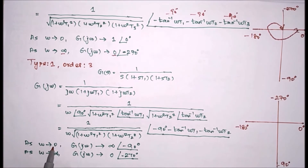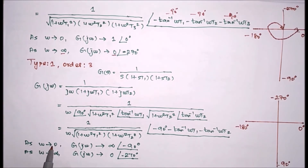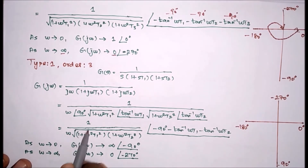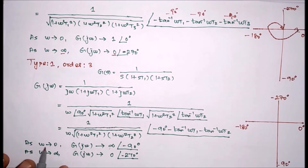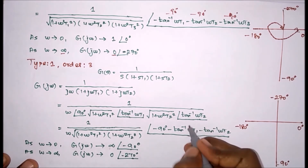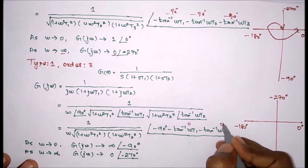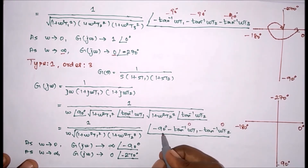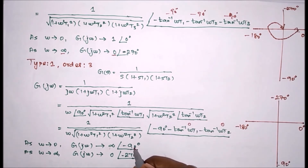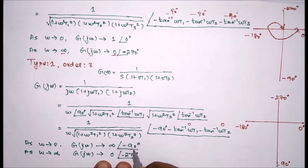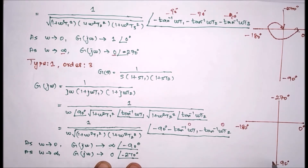As usual, we substitute omega equal to 0. When omega equals 0, the magnitude becomes 1 by 0, which equals infinity. Substituting 0 in the angle terms, those become 0, so the angle equals minus 90 degrees. Therefore, at omega equal to 0, the magnitude is infinity and the angle is minus 90 degrees.